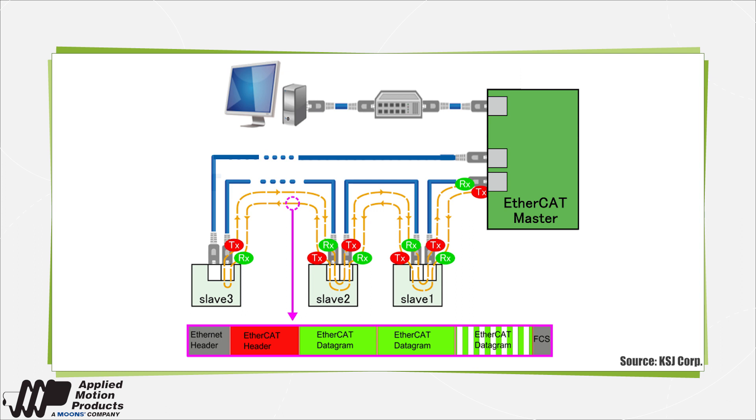EtherCAT offers cycle times of less than 100 microseconds, with low communication jitter of less than 1 microsecond. This enables precise synchronization.